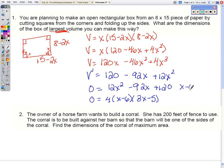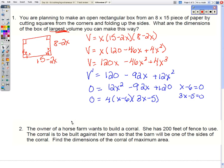So when I set each factor equal to zero, our two answers for x, x is either 6 or x is 5 thirds.